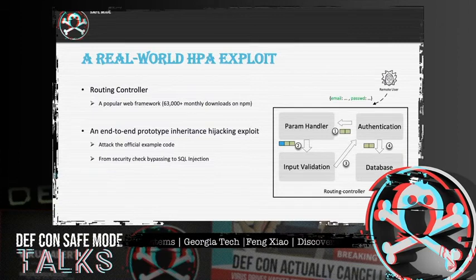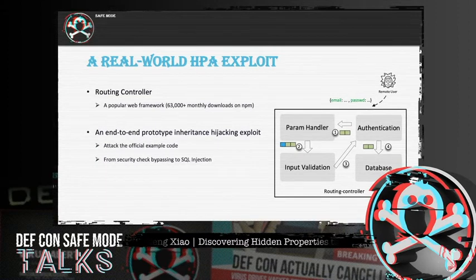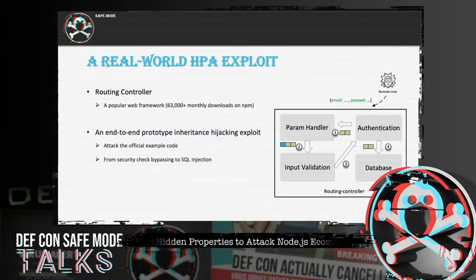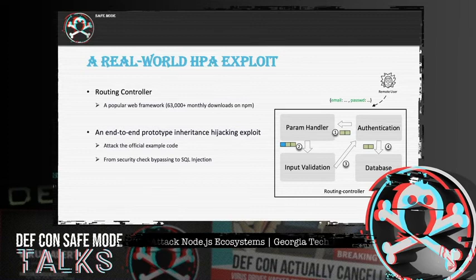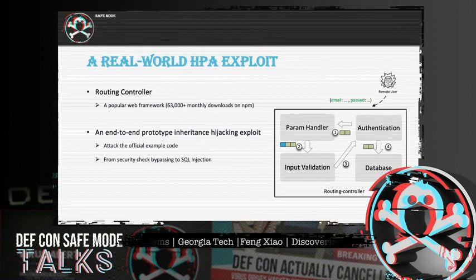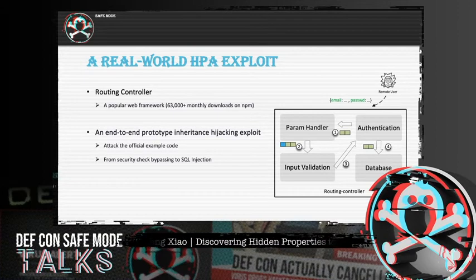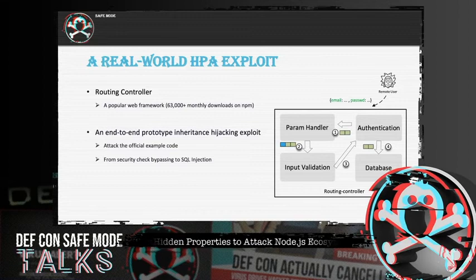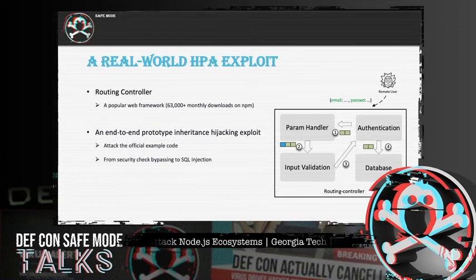With several pages of concept introduction, it's time to hack some real targets. In this example, we target a popular web framework named routing-controllers and attack its official example code to demonstrate an end-to-end prototype inheritance hijack exploit — from security check bypassing to SQL injection. A server program is deployed using routing-controllers. If a remote user wants to authenticate with the server, his data will flow into the following components: he sends his serialized data into the authentication module, which instantiates objects according to the JSON provided and sends it to the param handler.